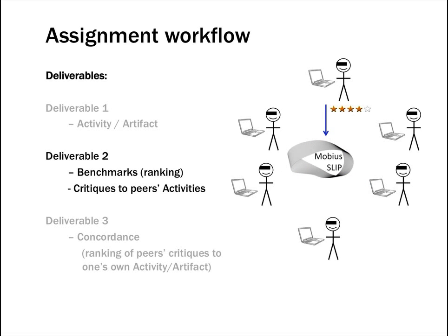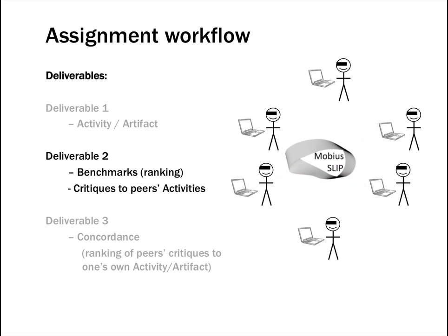In Deliverable 2, each student ranks their peers' essays from most to least responsive to the assignment's guidelines. In addition, the students provide written critiques of each of their peers' essays. Critiques are the formative component of assessment, and ranking is the summative component. The summative component can be used to generate grades. After the deadline for Deliverable 2 closes, each student receives their peers' critiques for their essays, but not the rankings, as this might bias their scoring of the critique itself.